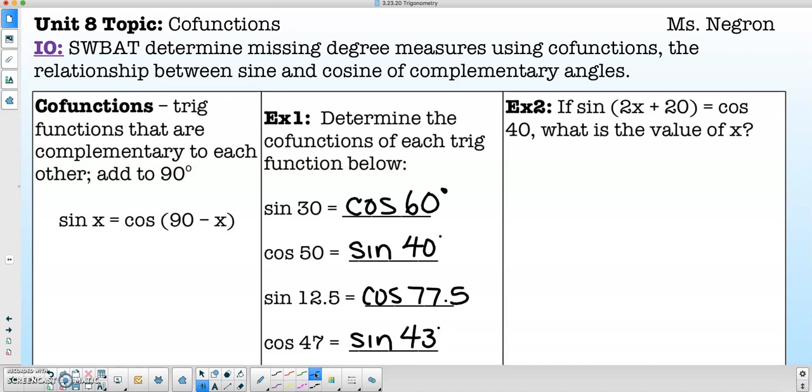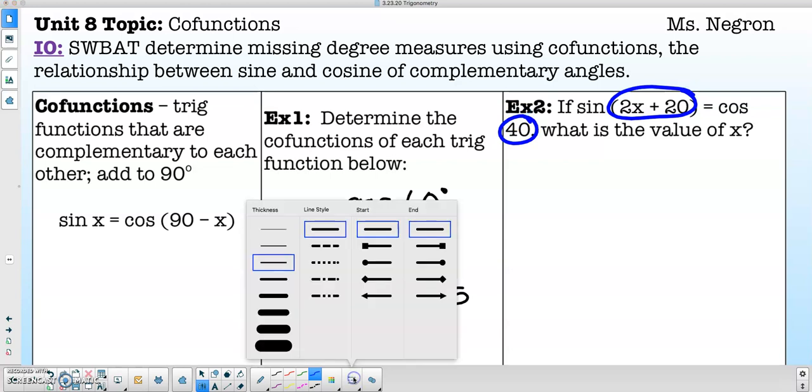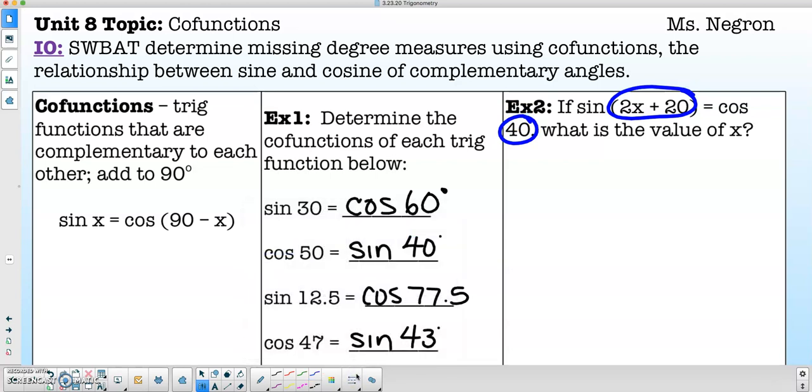So I know that the degree measurements in here, which are represented by 2x plus 20 and 40, are complementary. So what I'm going to do is I'm going to add both of these together. And they are going to equal to 90 degrees.